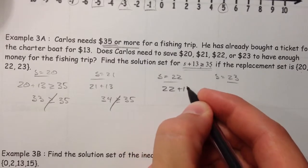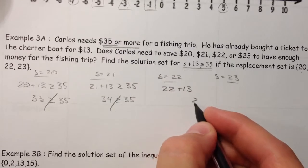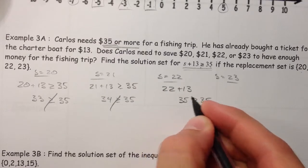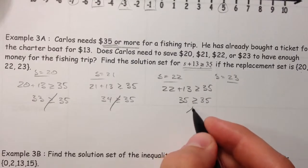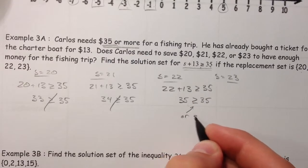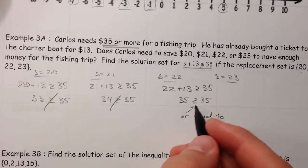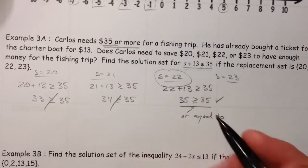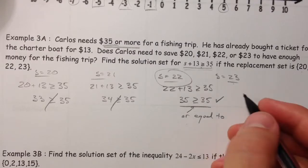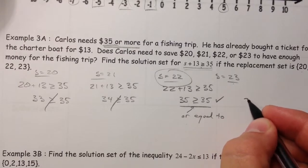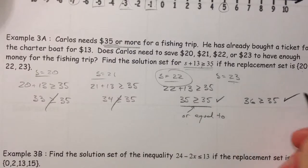22 plus 13. Is that greater than or equal to 35? We got exactly 35. So, now you have to say, well, this or equal to makes it okay for us to include it. So, that checks out. So, 22 is a solution. And if 22 was enough, 23, by default, is obviously going to be enough. And you notice that you get 36 is greater than or equal to 35. And so, that one checks out as well.